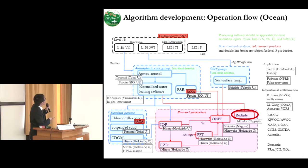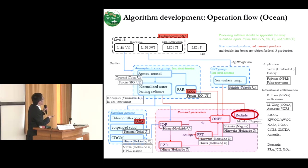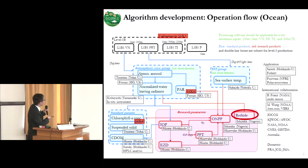This is the GCOMC algorithm development and operation flow for the ocean. There are 12 ocean products, such as sea surface temperature, chlorophyll-a concentration, and suspended solids. Today, I would like to talk about red tide.